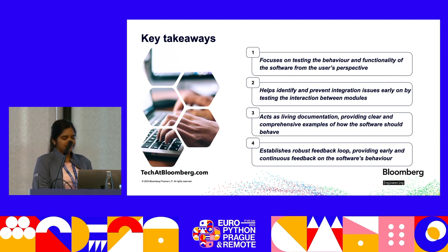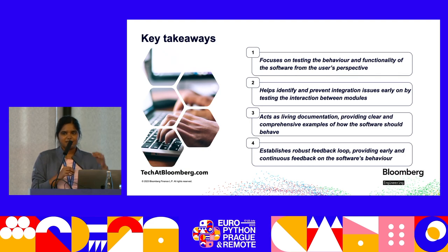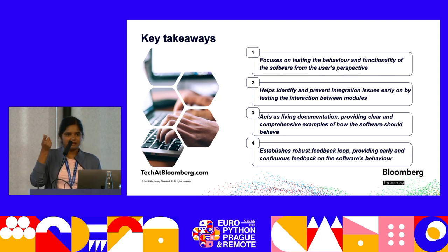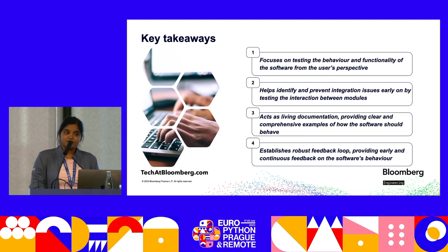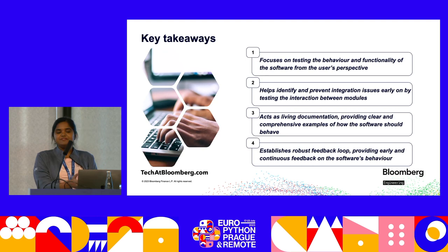Specification tests act as living documentation, providing clear and comprehensive examples of how the software should behave, and establishing a robust feedback loop with early and continuous feedback on software behavior. We all know the testing triangle: at the bottom layer you have unit tests, then integration tests, and at the top you have system-level tests. Unit tests run faster; as you go toward the top of the triangle, tests become slower. Our goal was to do something at the bottom tier — faster, yet testable, readable, and more efficient for us. And definitely, this was our journey and it was a successful journey.